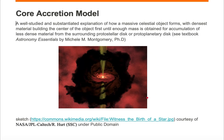In the core accretion model, the massive object forms from the center outwards. The core forms first until there is enough material to pull in the less dense material from the surrounding protostellar disk. Or if you're building a planet as your massive object, then you'll be pulling in material from the protoplanetary disk.